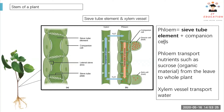In this slide, we need to know the function of sieve tube element and xylem vessel. In the previous form, we learned about phloem and xylem. Phloem is a combination of sieve tube element plus companion cell, and xylem is made out of xylem vessel.